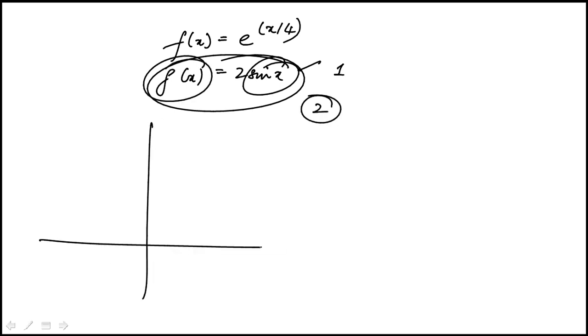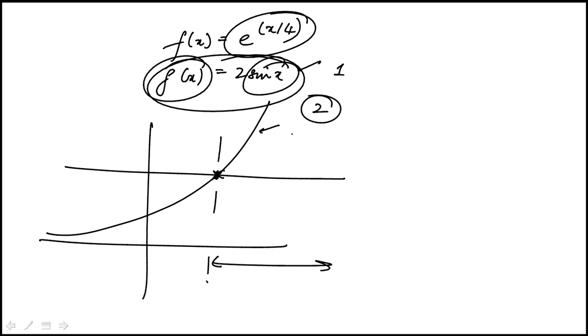You can graph this or it's good to know qualitatively what the exponential function looks like. It's going to look something like that. We're looking at those values of x where the intersection happens at some point. All values of x here, the exponential function would be greater than 2. So we just find the intersection.